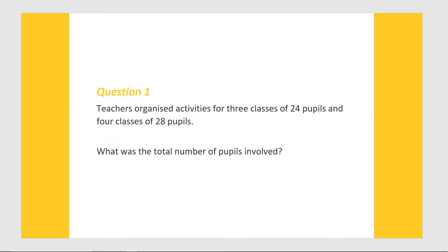Teachers organised activities for 3 classes of 24 pupils and 4 classes of 28 pupils. What was the total number of pupils involved? In this question we are told that there are 3 classes of 24 pupils and 4 classes of 28 pupils, and the question asks us to find the total number of pupils.